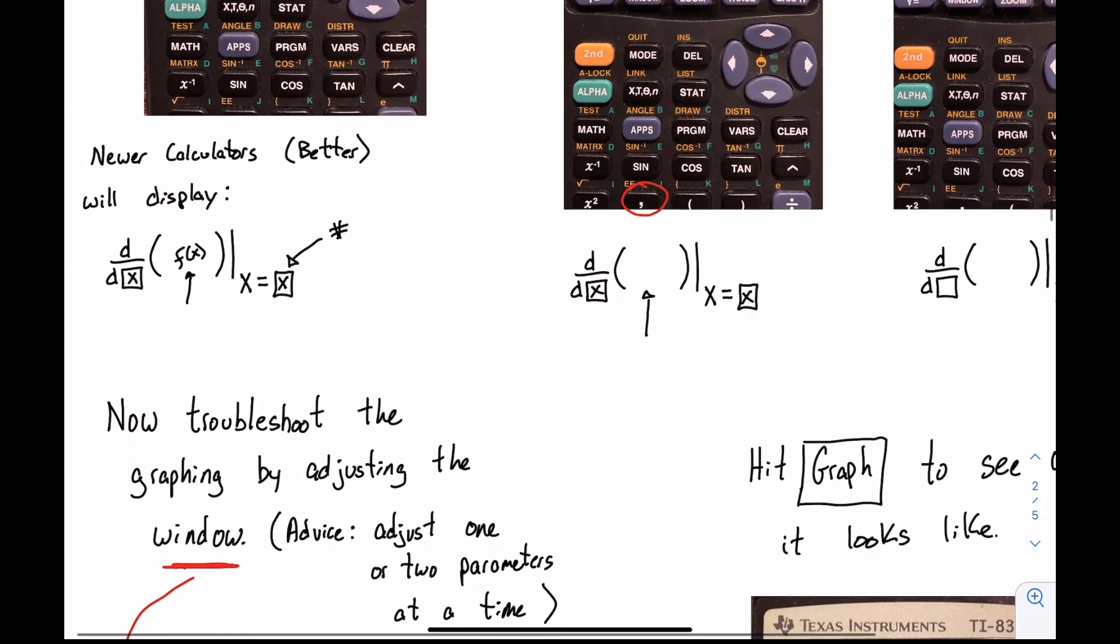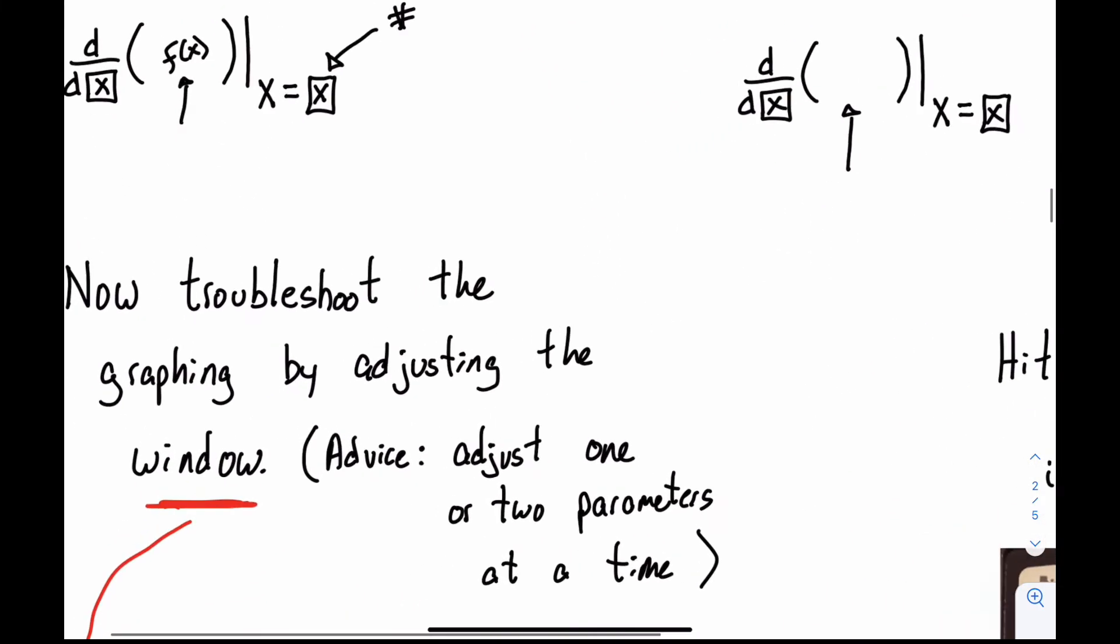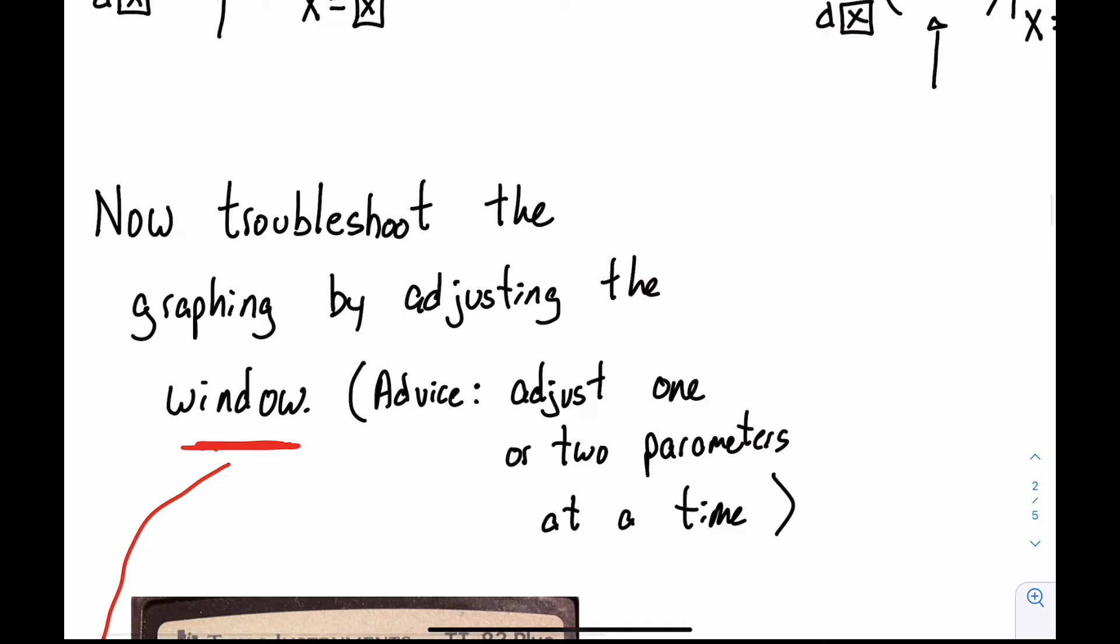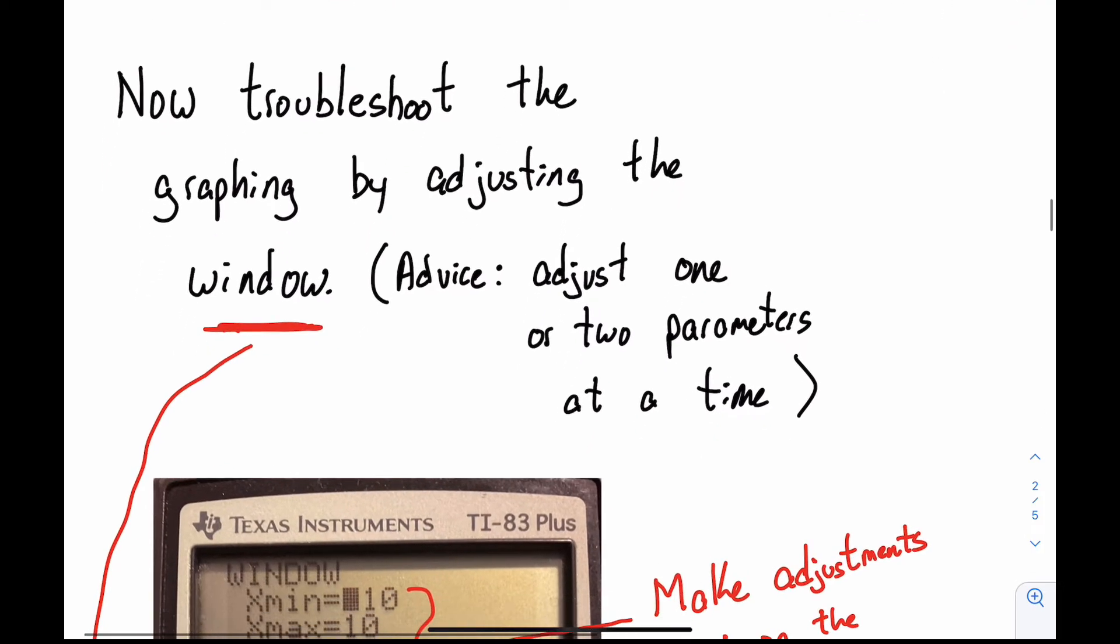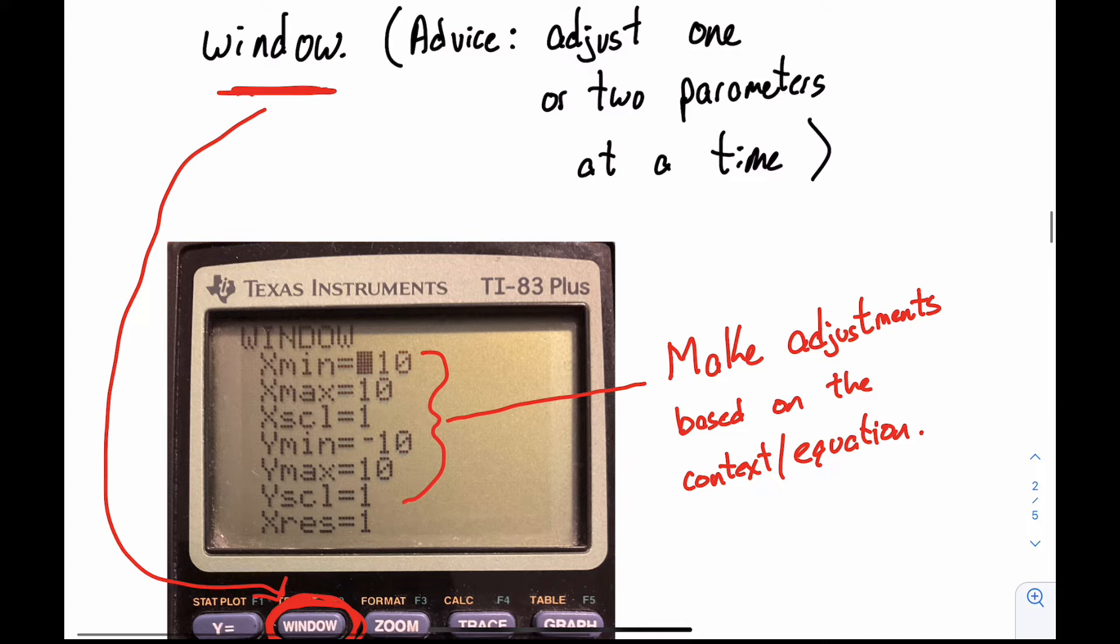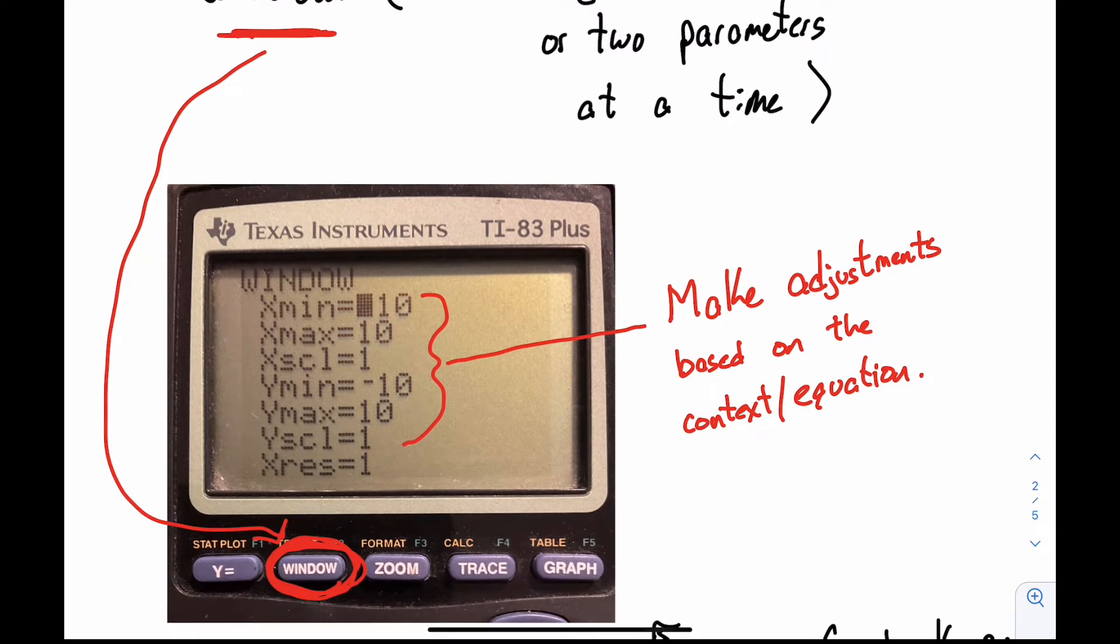And then, now it's time to troubleshoot. So this might be the trickiest part. So you're troubleshooting the graphing by adjusting the window. And my advice to you, especially as you're just starting off, is to adjust one or two parameters at a time. Don't adjust too much. So your window, the standard window, looks like this. And depending on what you previously have graphed, you might not have that standard window set up already. It might be from a previous thing you've graphed. So that's the initial thing.